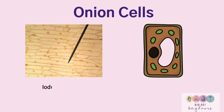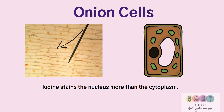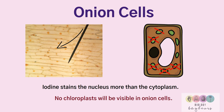Remember that iodine was the stain applied, and iodine stains the nucleus or nuclei more than the cytoplasm. You can see the little yellow dots in the picture here — these are all the yellow nuclei. It is also important to note that no chloroplasts will be visible in the onion cells, so don't draw them on your diagrams.